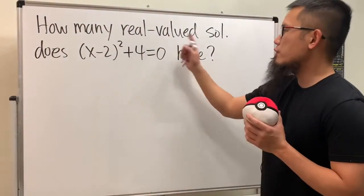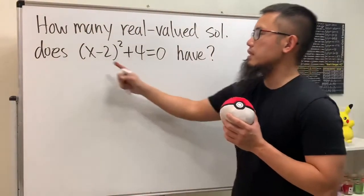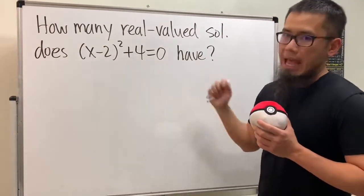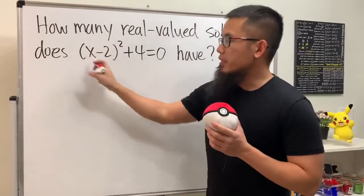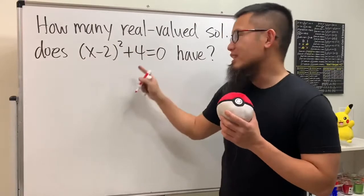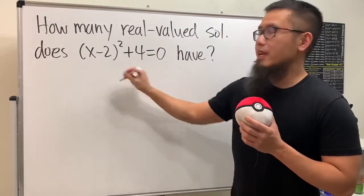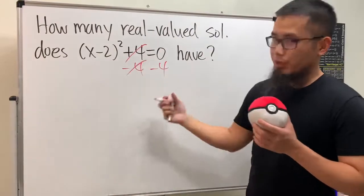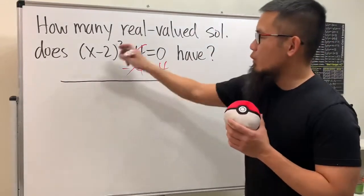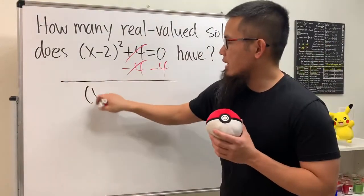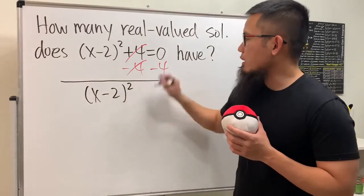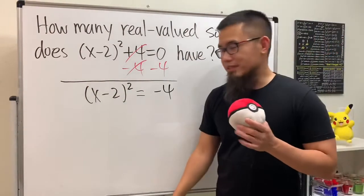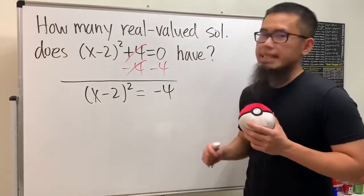How many real value solutions does the equation (x - 2)² + 4 = 0 have? Well, we have a perfect square here, so let's isolate this part first. We subtract 4 from both sides, and we get x minus 2 squared is equal to negative 4.